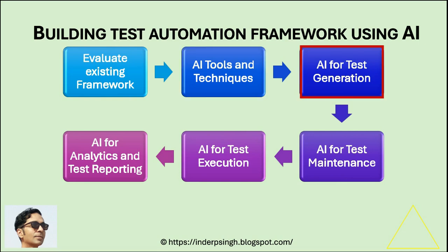Step three: Implement AI for test generation. You can implement Generative AI for QA automation into your test generation process. This means automating the creation of test cases, test data, and test scripts based on existing test results and defect reports.